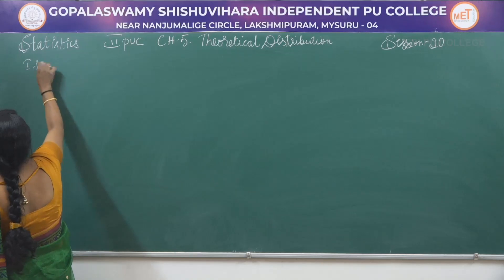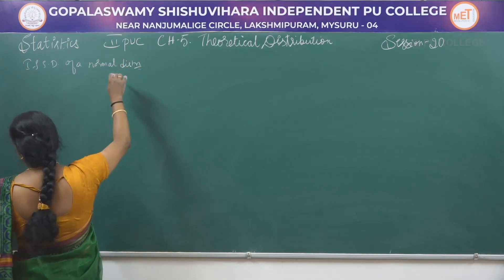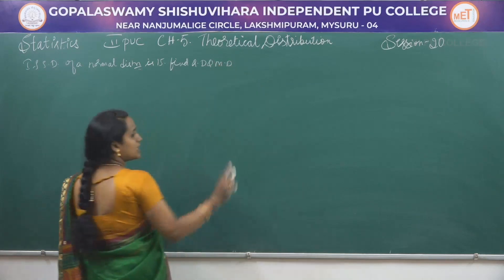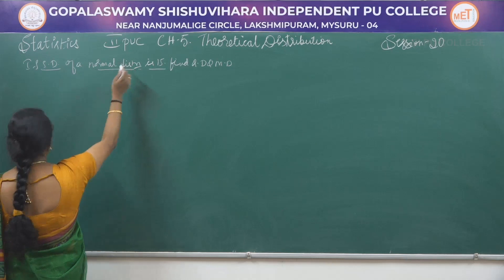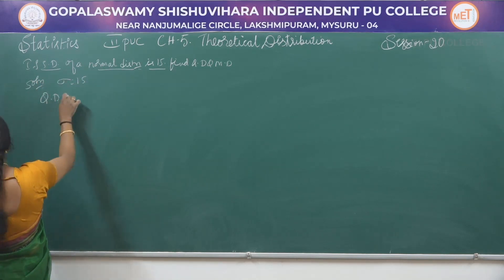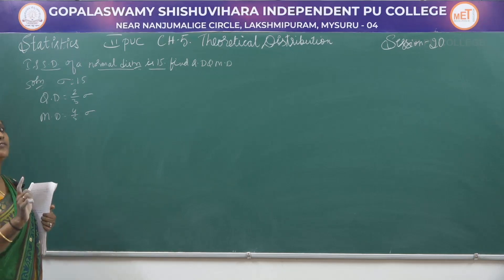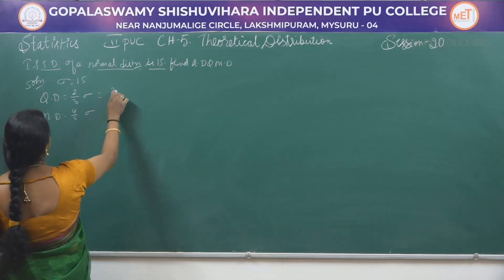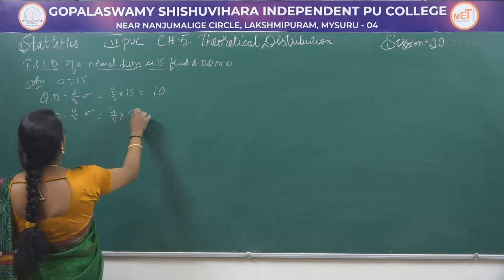Problem: If the standard deviation of a normal distribution is 15, find QD and MD. QD is quartile deviation and MD is mean deviation. In normal distribution, quartile deviation equals (2/3)σ and mean deviation equals (4/5)σ. So QD = (2/3) × 15 = 10, and MD = (4/5) × 15 = 12.